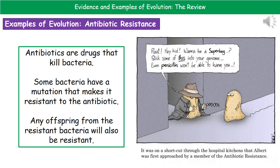Our second example of evolution is antibiotic resistance in bacteria. Antibiotics are drugs used to kill bacteria, but some bacteria have a mutation that makes them resistant to the antibiotic, meaning the bacteria won't be killed by it. Any offspring from that resistant bacteria will inherit that gene and will also be resistant. We have a clear example of this in the fact that we are seeing more and more bacteria becoming resistant to our antibiotics as time goes on.